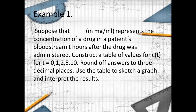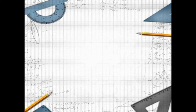Example: Suppose that c of t equals 5t over t squared plus 1, in milligrams per ml, represents the concentration of a drug in a patient's bloodstream t hours after the drug was administered. Construct a table of values for c of t for t equals 0, 1, 2, 5, and 10. Round answers to three decimal places, use the table to sketch a graph, and interpret the result.